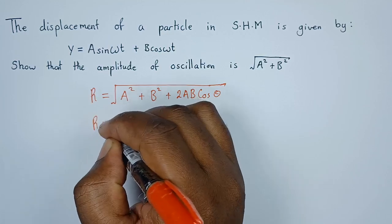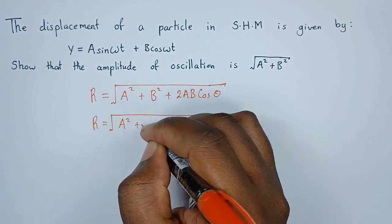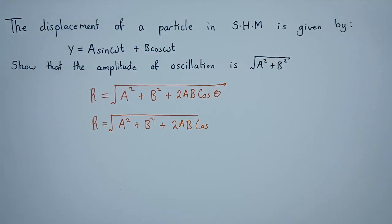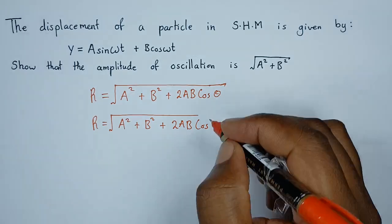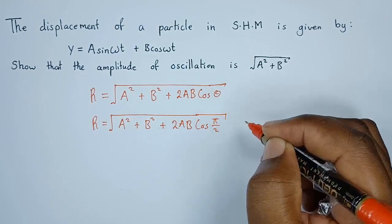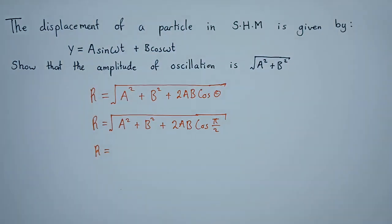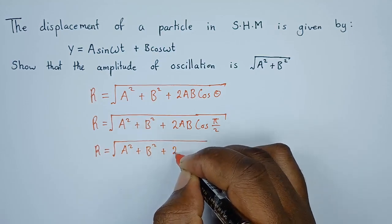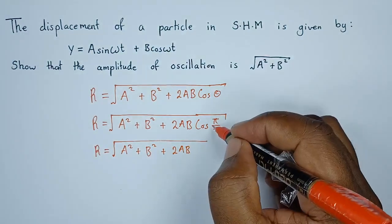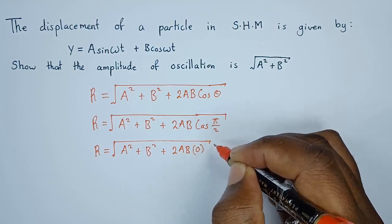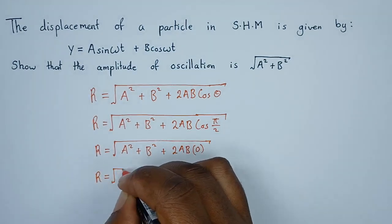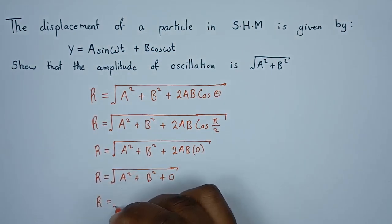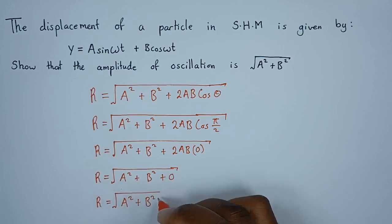The resultant amplitude is given by r = √(a² + b² + 2ab·cos θ). We substitute the phase difference θ = π/2, so cos(90°) = 0. This means the resultant amplitude simplifies to r = √(a² + b²), which is what we are looking for.